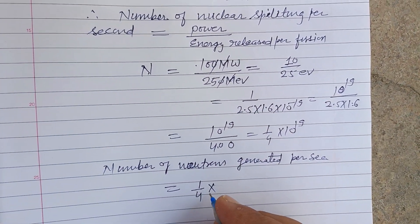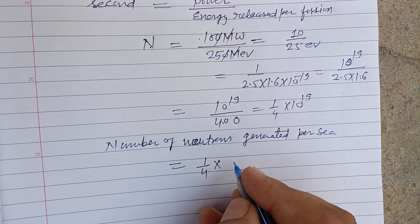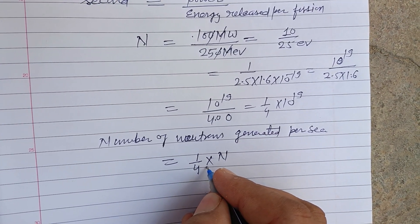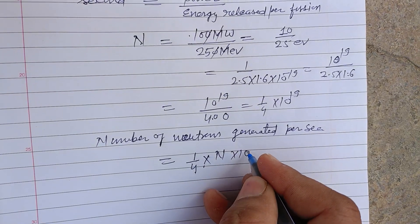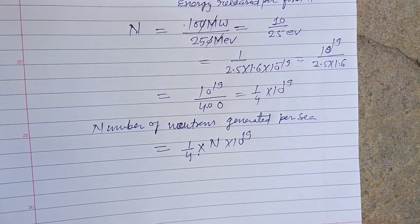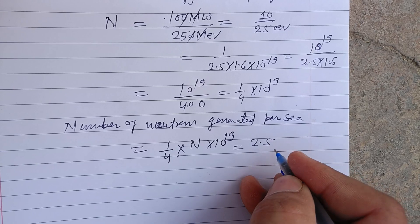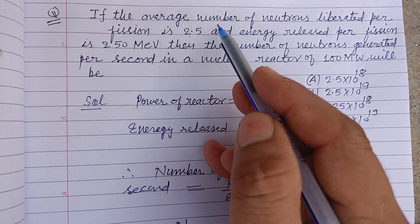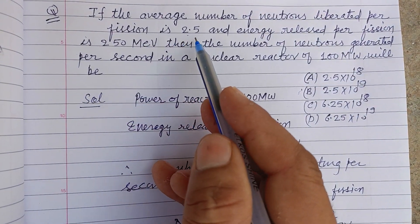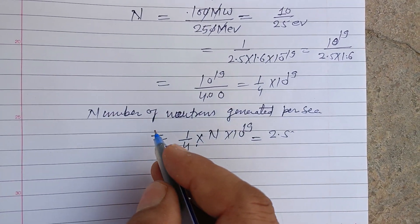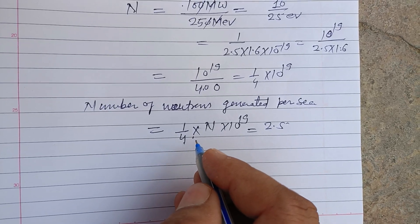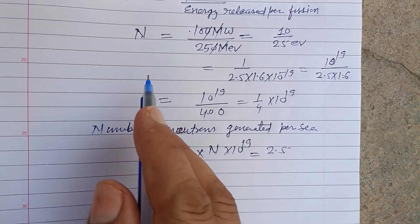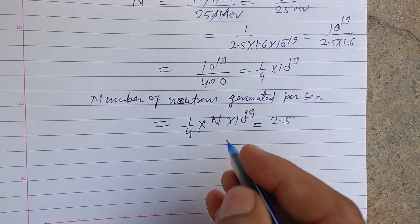Number of nuclei splitting per second is N. So N into, one upon four times 10 to the power 19. Average number of neutrons generated is 2.5, 2.5 here. Average number of neutrons generated per fission is 2.5. Therefore, number of neutrons generated per second is average number of neutrons into the number of nuclei splitting per second, N.